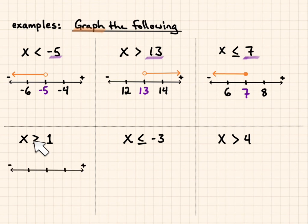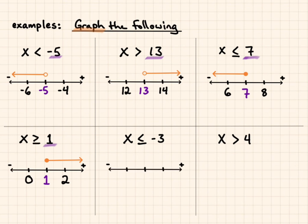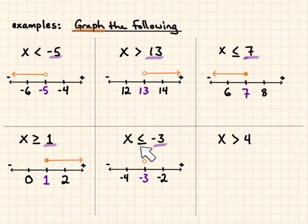For our next one: x is greater than or equal to 1. I'm going to put 1 in the center with values to the left and right. Because it can be equal to, I fill in that circle, and I draw an arrow going towards the true values — towards the positive. Next: x is less than or equal to negative 3. I'll create my number line. Remember that for negatives, you count away from 0, so negative 4 is getting less and negative 2 is greater. Negative 3 is included because it can be equal to, so I put in the dot, and I graph towards the negative side.